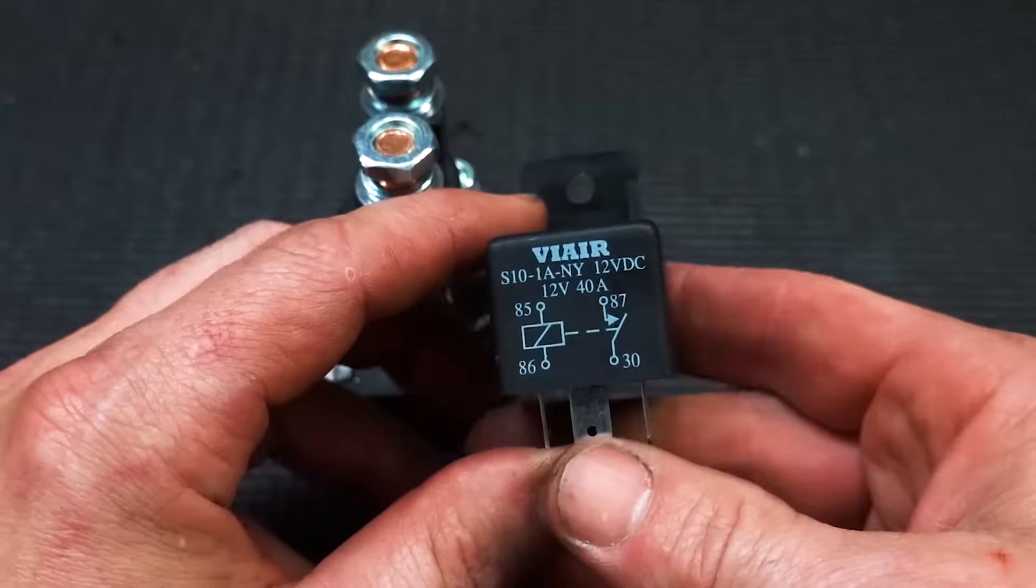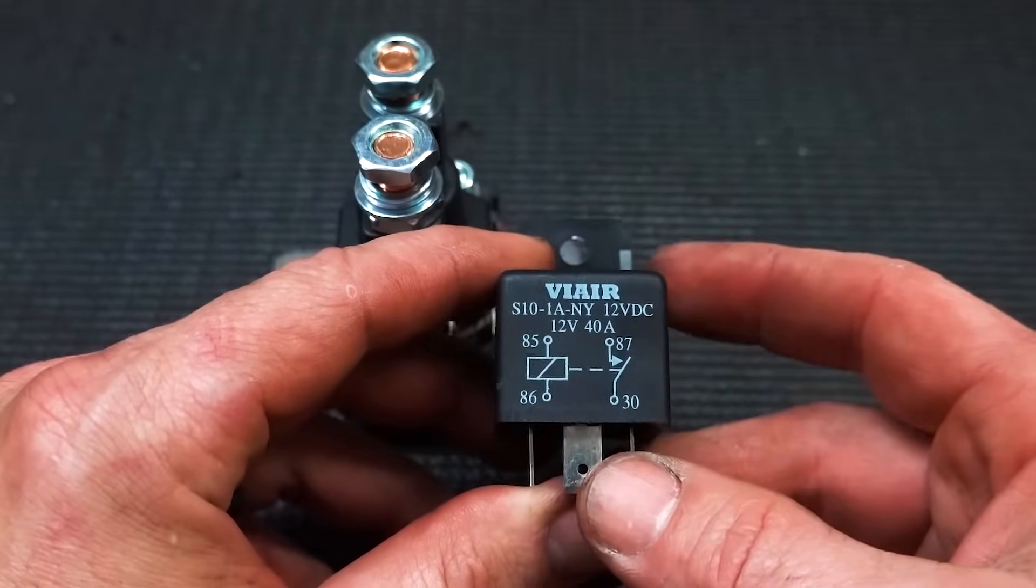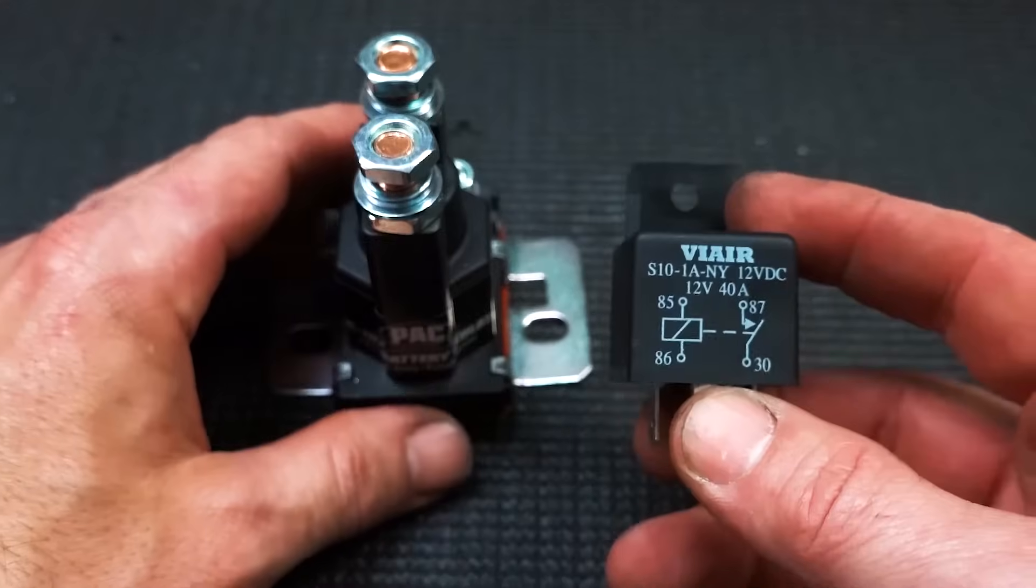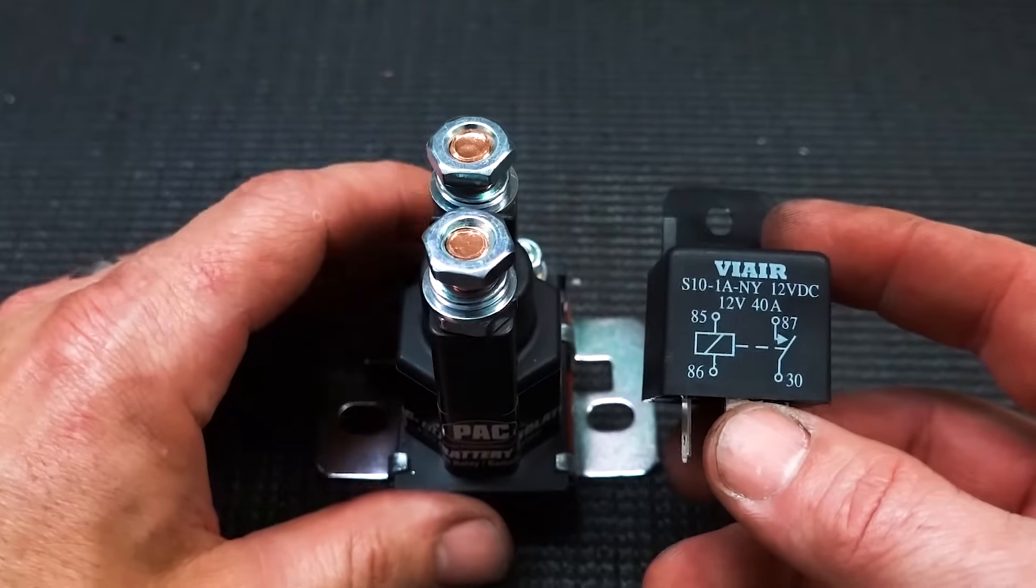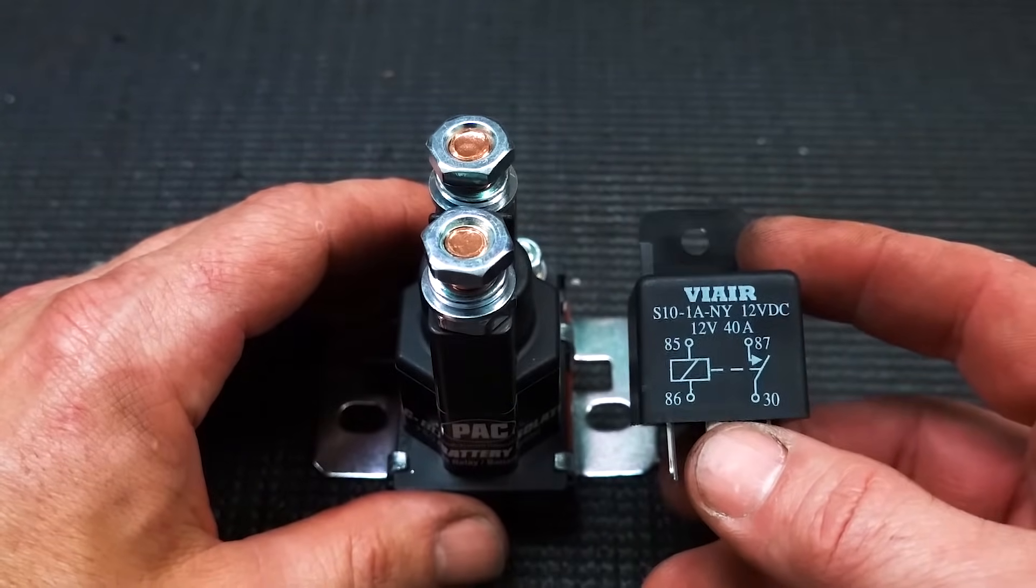These regular 40 amp relays are good for a single compressor. If you were to put two compressors on this or four compressors on this one, you're going to have a drastically shorter life of either unit because you're working them too hard on your startup.